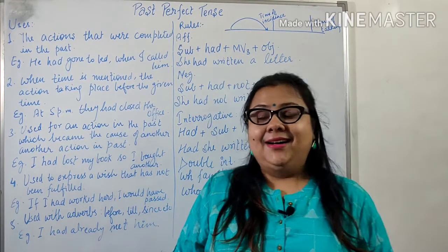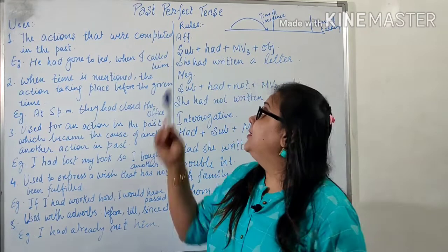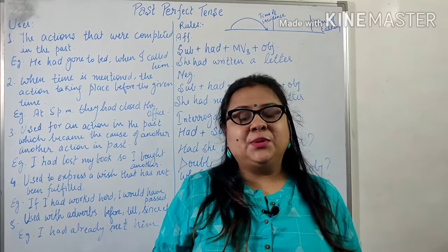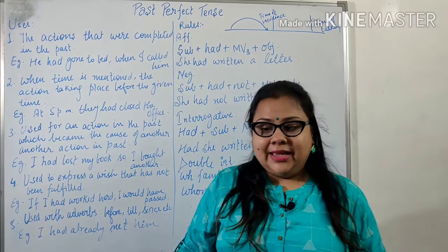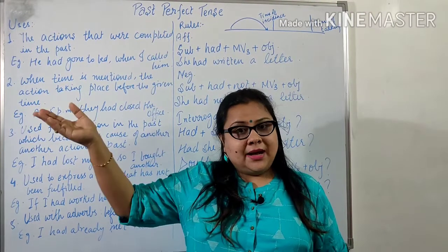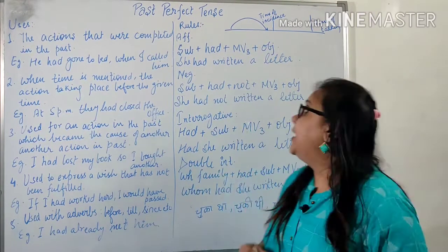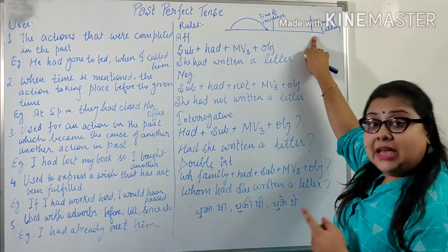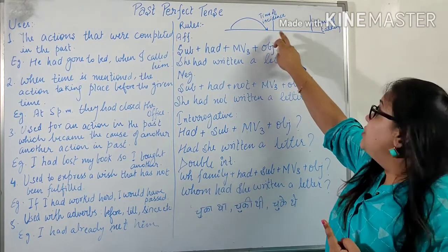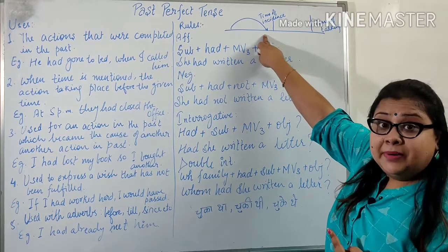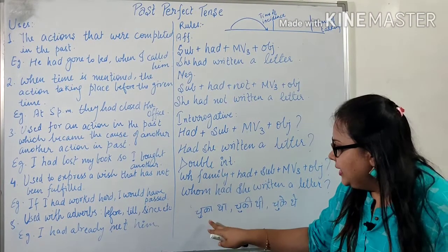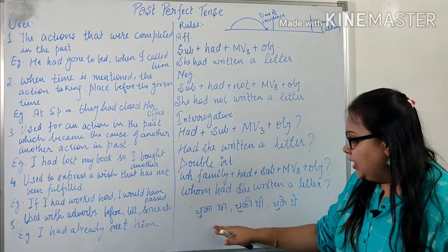Hello everyone, today I'm going to teach you Past Perfect tense. Let me tell you when past perfect is used. If this is the time of speaking and I'm explaining some incidents which took place in the past with perfection, I'll show you with a diagram. This is the time of talking and this is the time when the incident happened — so it had happened.